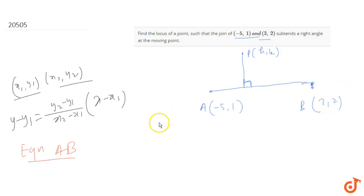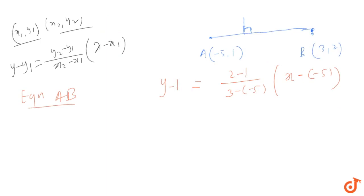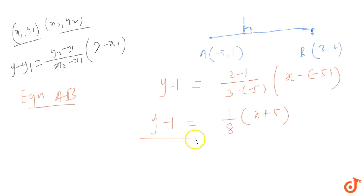Let x1, y1 be (-5, 1) and x2, y2 be (3, 2). Substituting: y minus 1 equals (2 minus 1) over (3 minus minus 5), times (x minus minus 5). The equation becomes y minus 1 equals (1/8)(x plus 5). So the slope of line AB is 1/8.